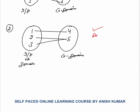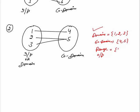Now, domain of this function would be — domain, or you can say the input — input range would be 1, 2 and 3. That is the domain of this function. Co-domain would be 4 and 5. Range is the output. Output is also 4 and 5. So, you must know what is the domain, co-domain and range.